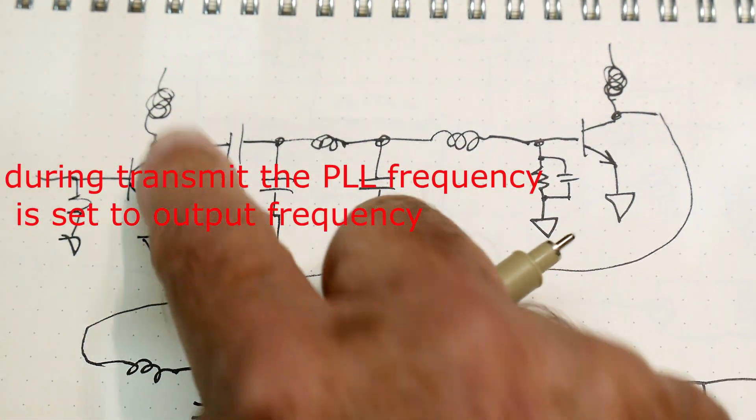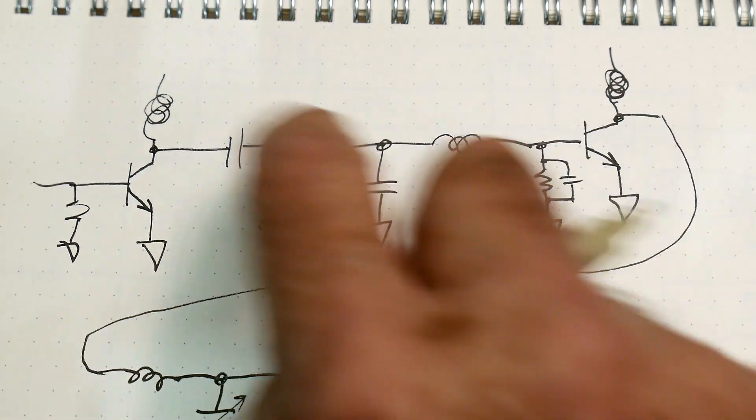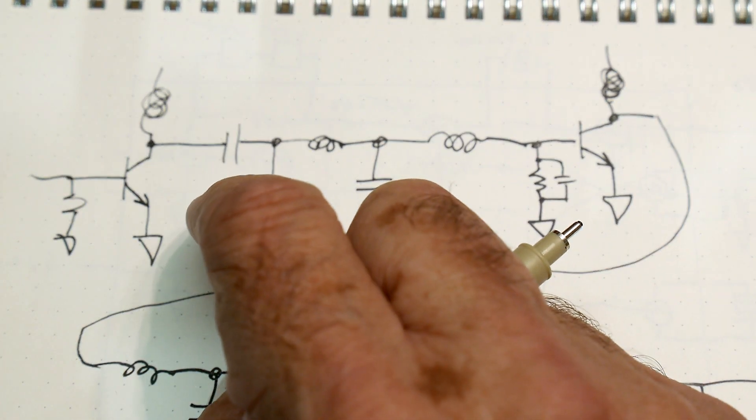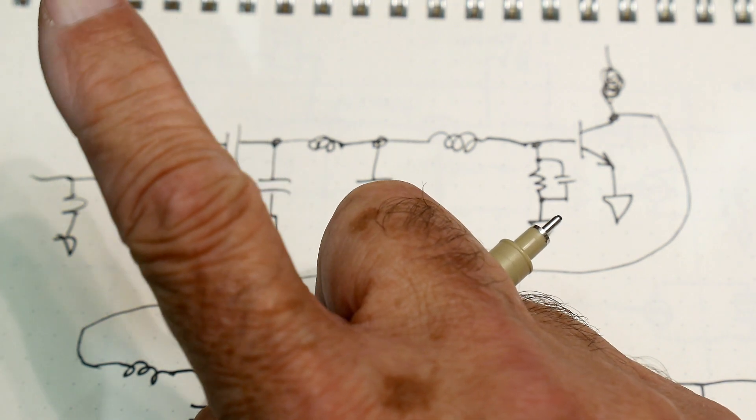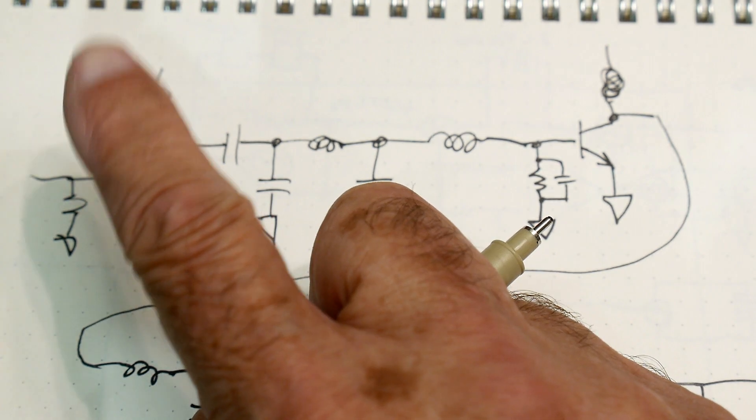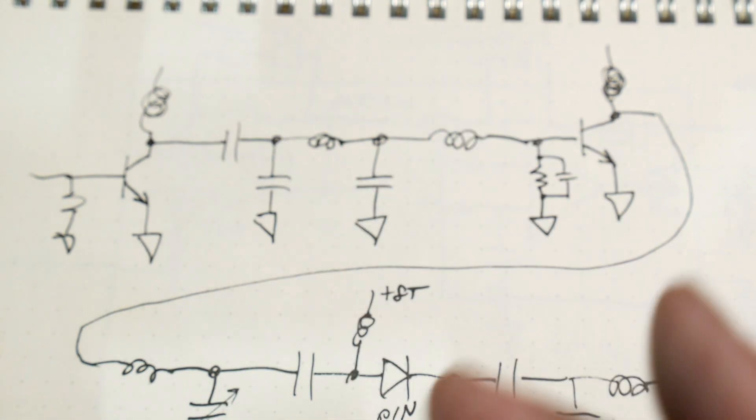Now these amplifiers, this is the driver and this is the final amplifier. These don't have to be linear. They only have to work at full power. They don't have to be modulated. So you can use a simpler type of amplifier.